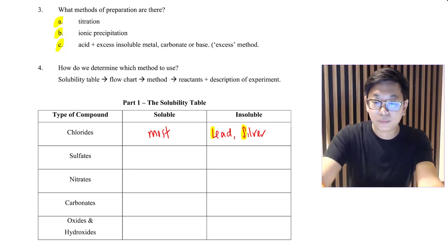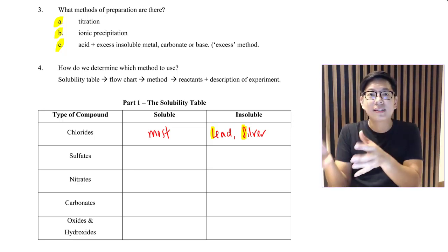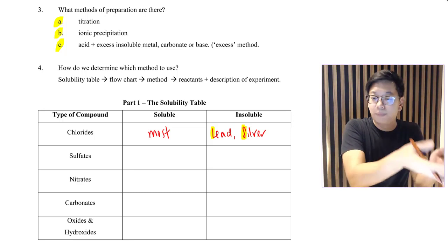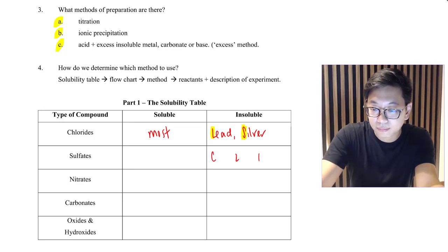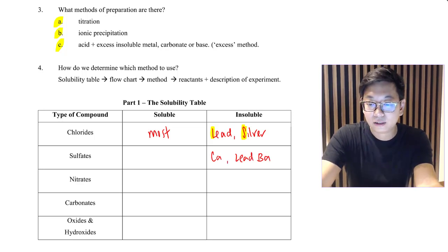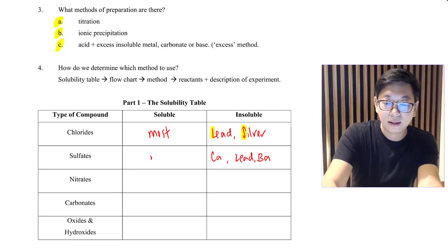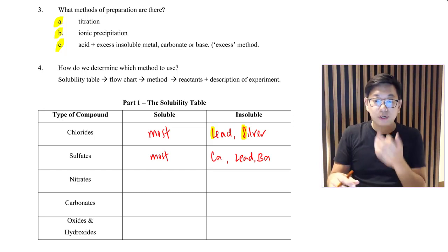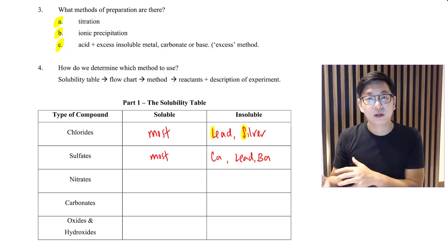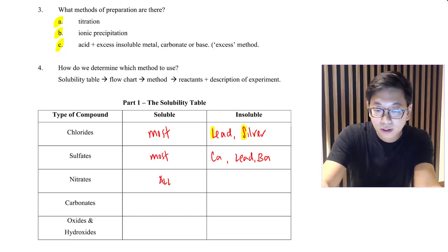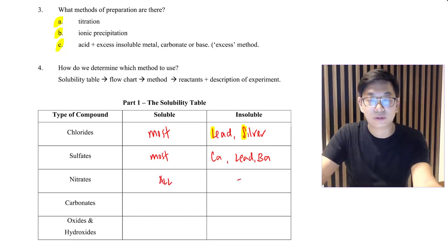For sulfates, there are three that are insoluble, forming the word CLB: C for calcium, L for lead, and B for barium. Most other sulfates are soluble. For nitrates, there is no such thing as an insoluble nitrate — all nitrates are soluble.